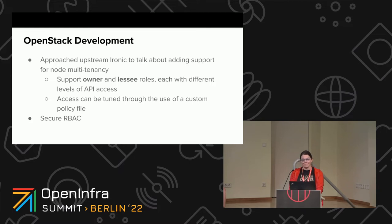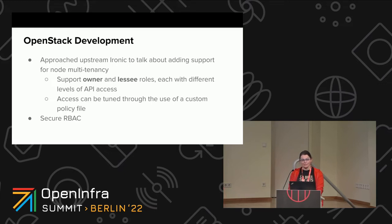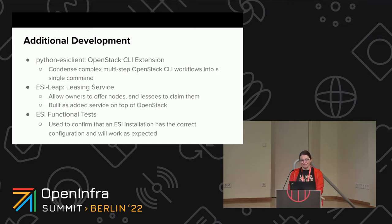Custom policy files were needed because by default Ironic still wanted to restrict API access to admins to maintain backwards compatibility. Not too long after Ironic node multi-tenancy was merged, upstream Ironic started planning the implementation of secure RBAC through an effort led by Julia Krieger. She updated the Ironic code while giving a heads-up to the ESI team so we could give feedback and review the changes to make sure they wouldn't conflict with our requirements. As a result, recent releases of Ironic have sane defaults that allow appropriate API access to owners and lessees.